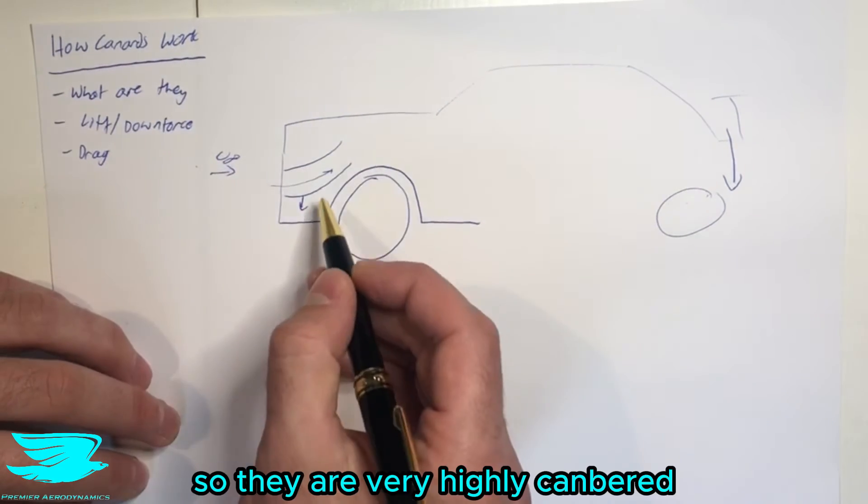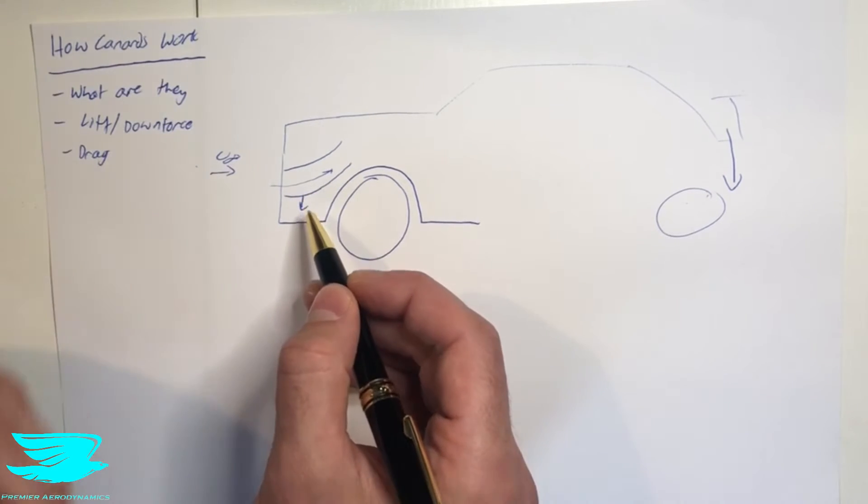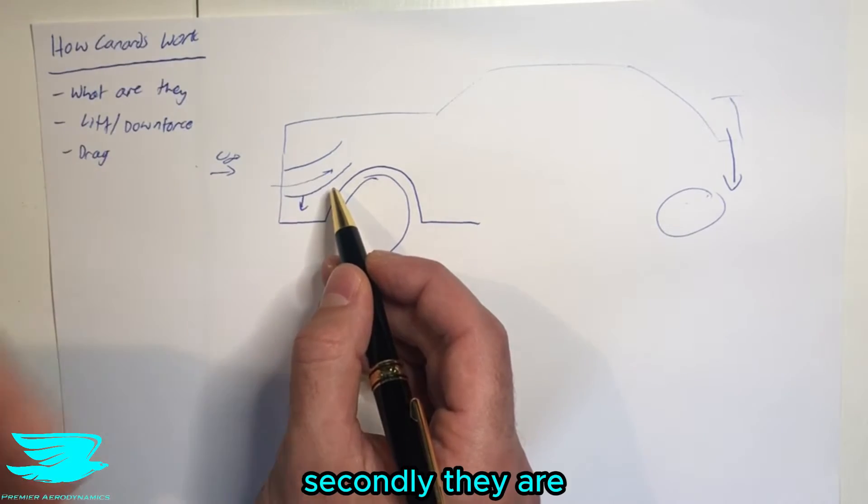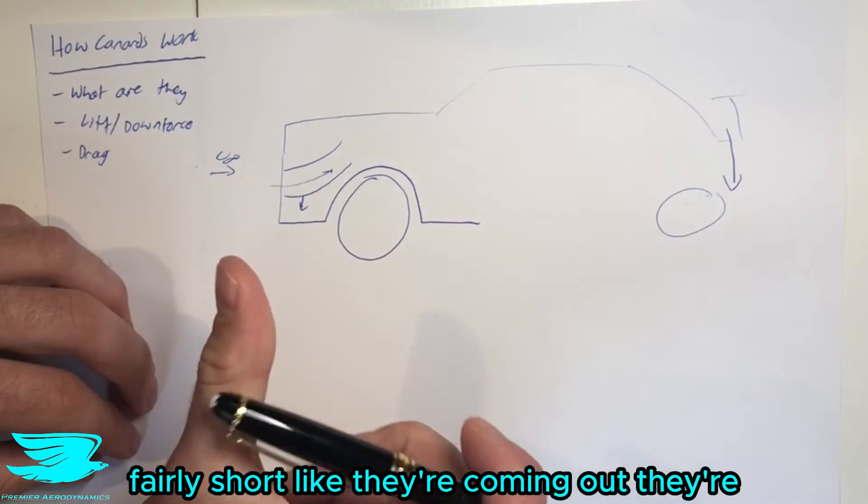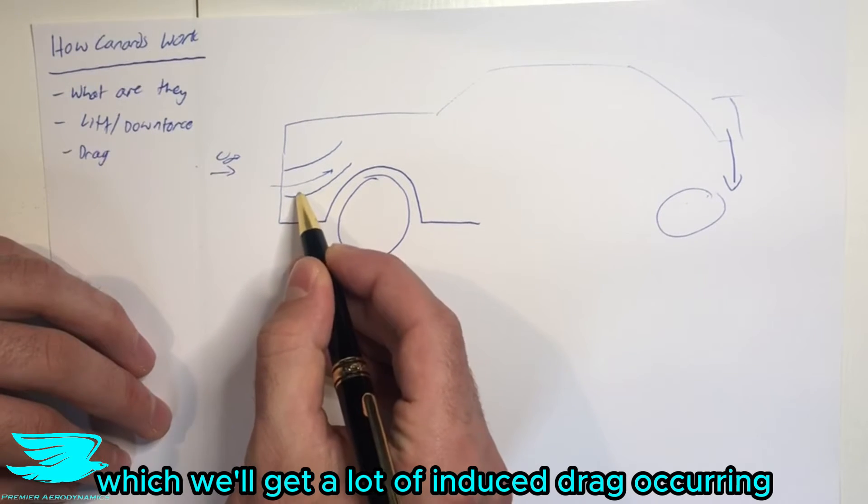First of all, let's look at these canards. They are very highly cambered, and they are at a very high angle of attack. So that means we are going to be producing a lot of drag out of this normally. Secondly, they are fairly short, like coming out, they're not that wide. So they are fairly low aspect ratio, which means we get a lot of induced drag occurring,